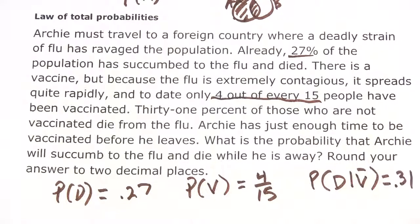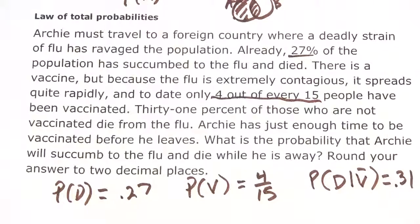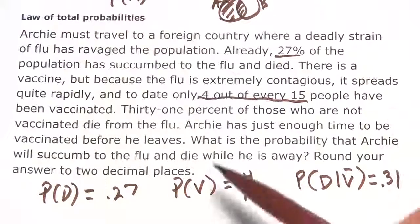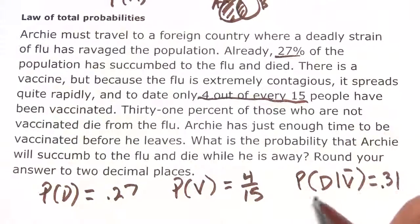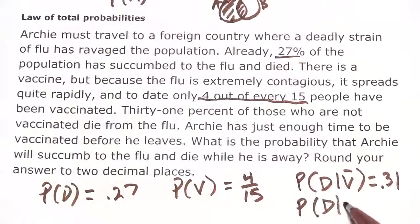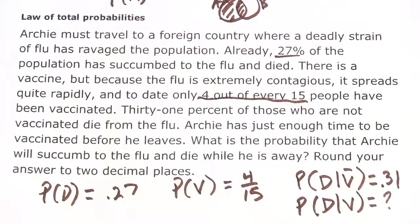It says Archie has just enough time to be vaccinated before he leaves. What is the probability that Archie will succumb to the flu and die while he is away? So what are they actually asking for? They're telling us Archie will get vaccinated and we want to know the probability that he'll die. This is another conditional: the probability of death when you have been vaccinated, P(D|V). We're looking for that.